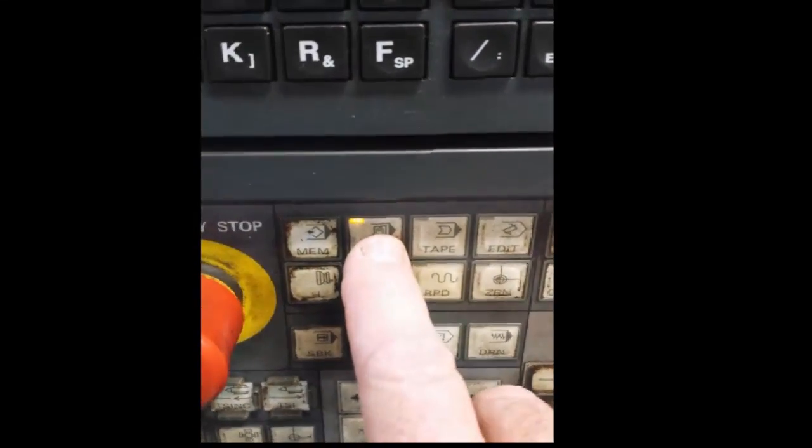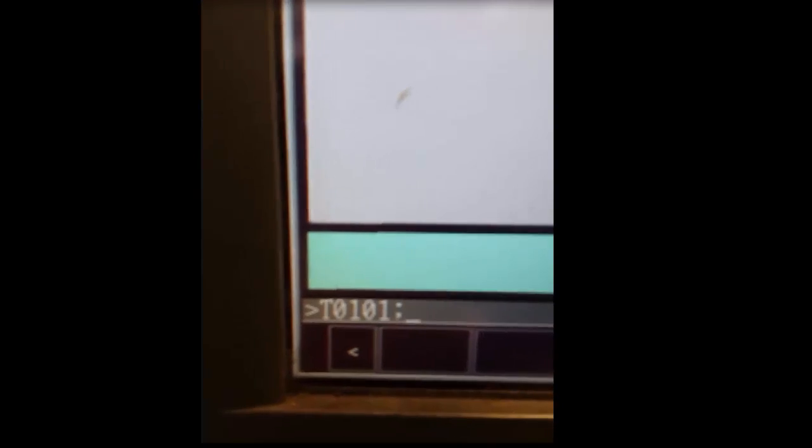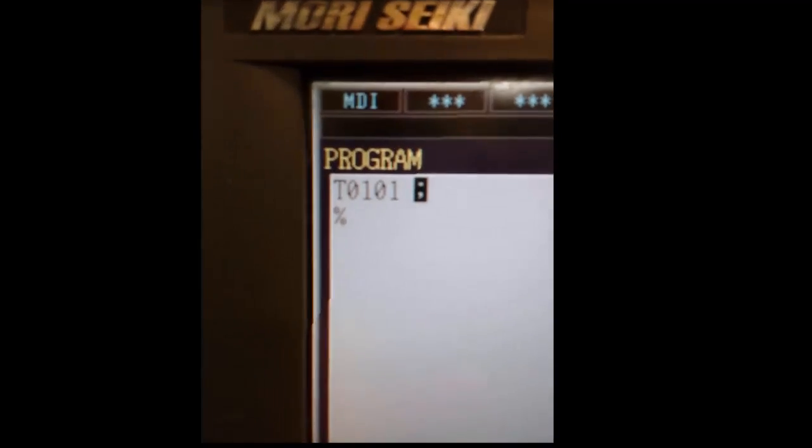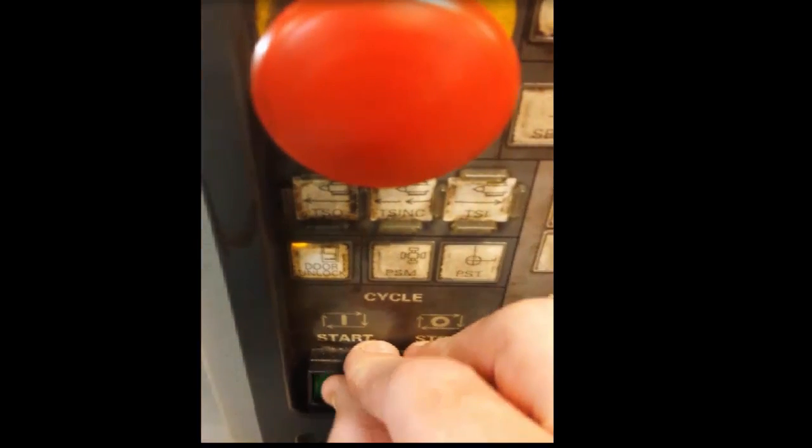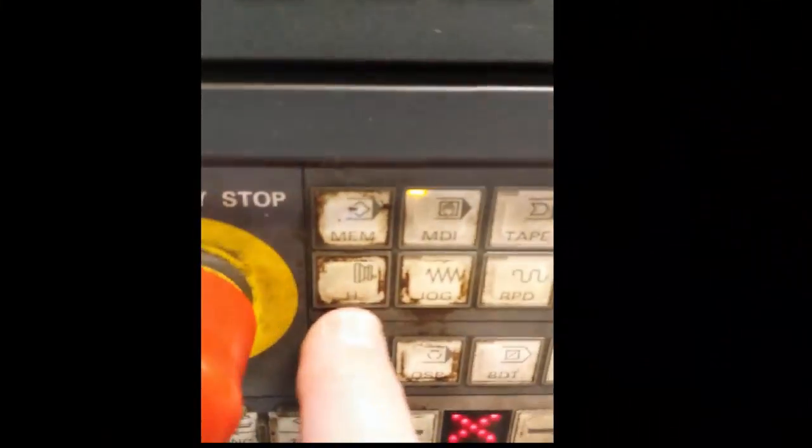We're going to start out by selecting MDI mode and then we'll select the program screen and we're going to key in T0101. That calls up tool 1 and brings in offset 1. We hit cycle start and that's how you want to select your tool.